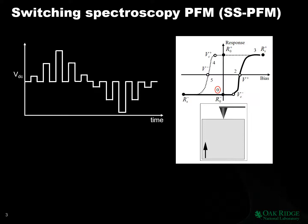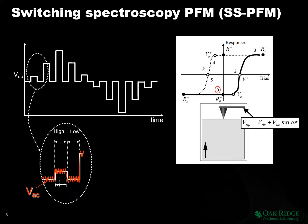In SS-PFM, the AFM tip is positioned at a single region of the material surface. A complex waveform is applied to the tip: a triangular waveform modulated by rectangular pulses, with a measurement waveform superimposed on top. The large waveform switches polarization, while the measurement waveform detects changes in the polarization state. The measurement can be performed with classical periodic modulation or with a band excitation wave, and can be applied in the off-state with the signal turned off during the pulse.